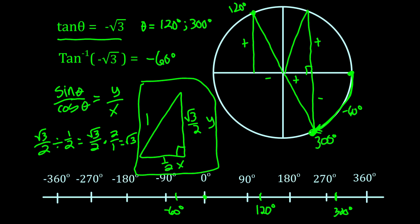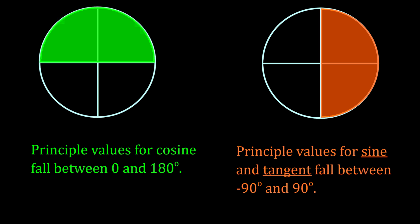To summarize: for cosine, all principal values fall between 0 and 180 degrees. For sine and tangent, principal values fall between -90 and +90 degrees. Negative values are just a quicker path than going all the way around to 270–360. When you see a capital letter on Sine, Cosine, or Tangent, that tells you to give the principal value.